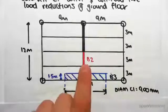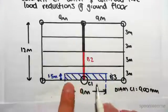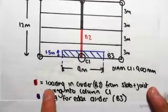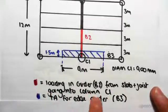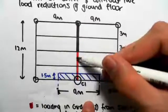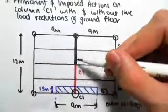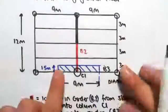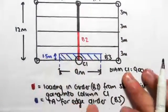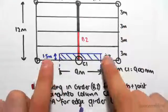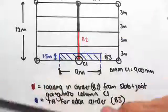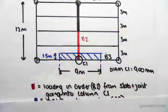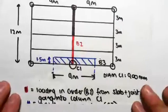So we have girder B2 transferring into the column, exterior girder B3 transferring into the column, and the weight of the column itself. The red shows the loading in B2 from the slab and joist above going into column C1. Only this portion of the girder goes into the column, because the other half is taken by the adjacent column. The blue highlighted area shows the tributary area for edge girder B3, since the areas either side are taken by those columns, and everything above has already been accounted for by the joists. I hope this load path is making sense — it's quite important to grasp that concept.